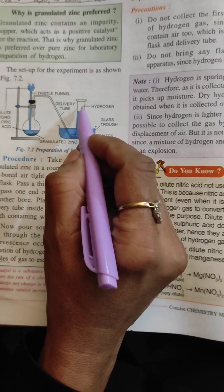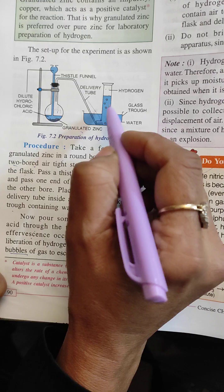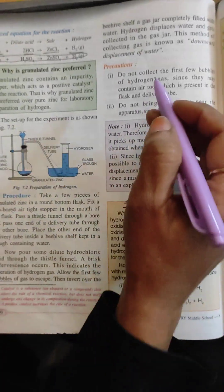Kya hoga? Ke ye jo water hai water neeche aa jayega aur gas upar ikathi ho jayegi gas jar mein. Theek hai? So this is known as downward displacement of water. Water neeche displaced ho jayega.